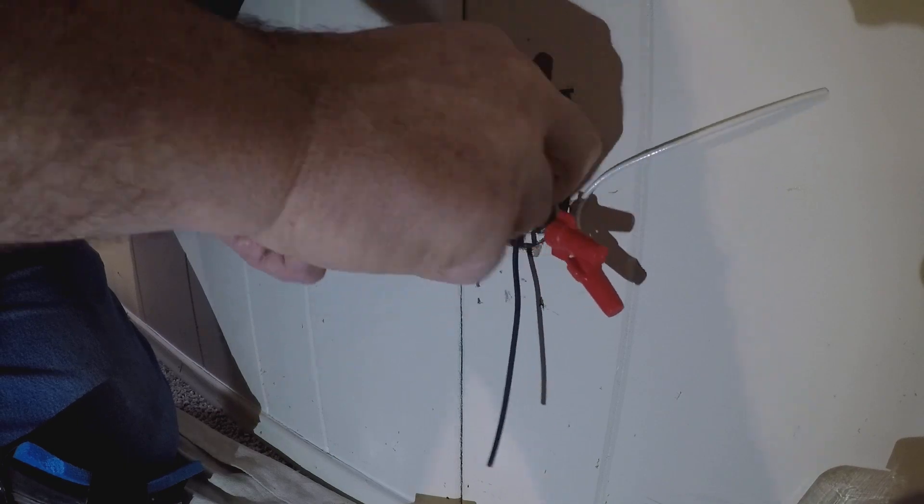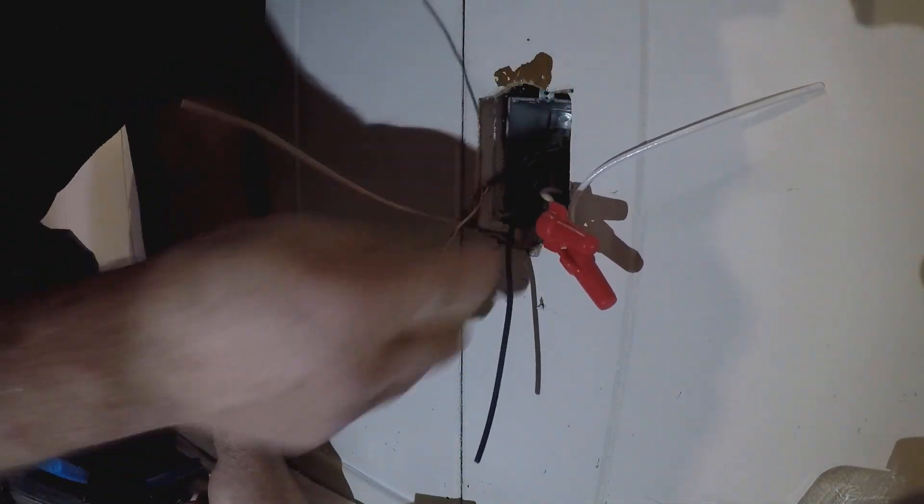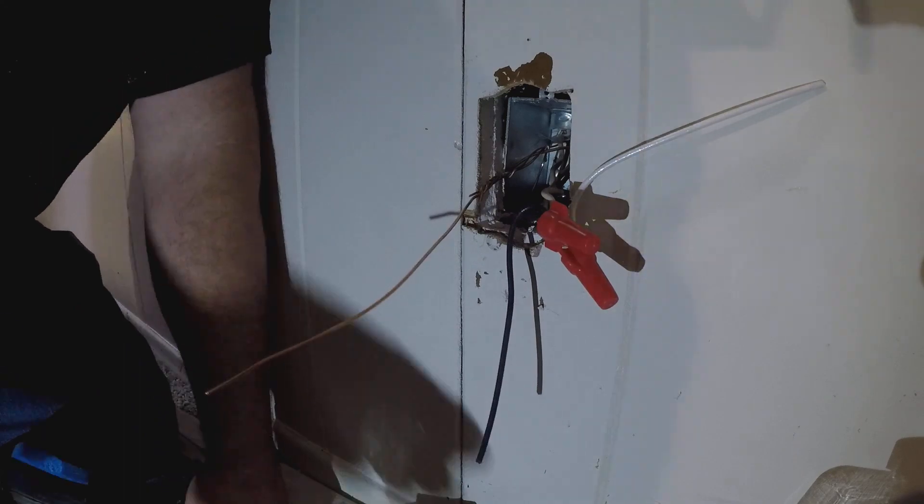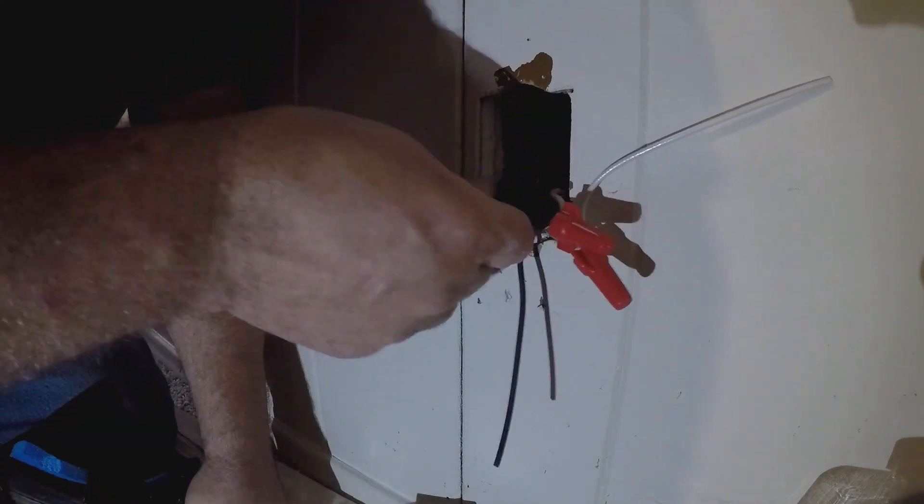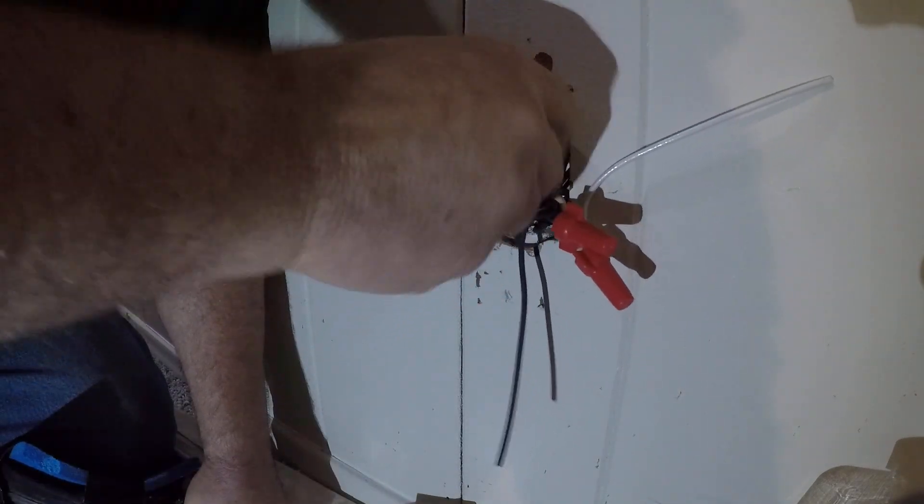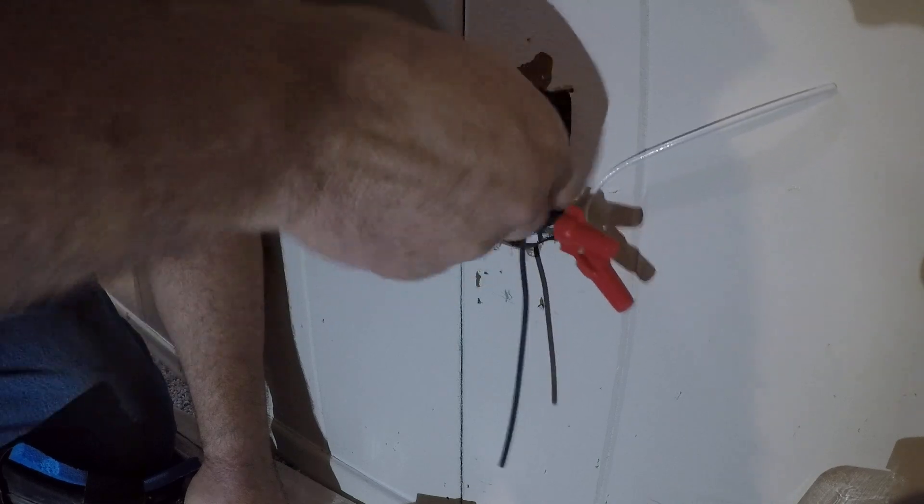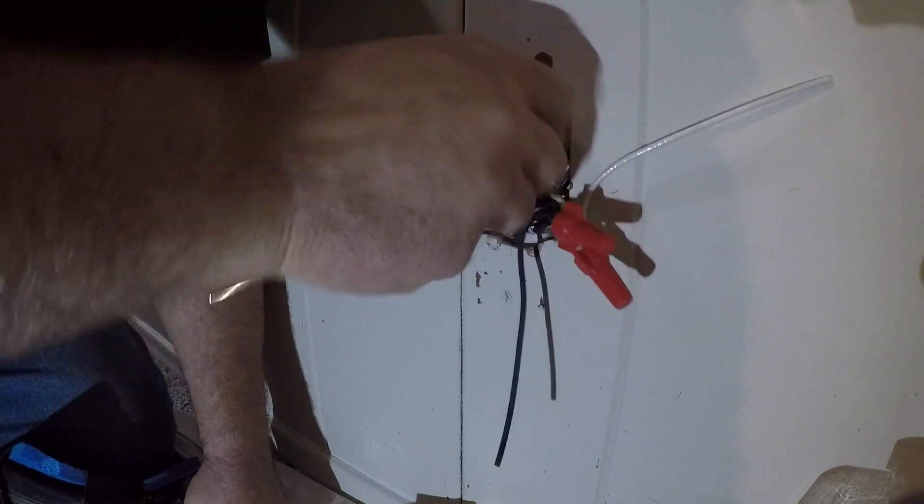So I'm going to twist all the wires together, clip it, put the green wire nut on, and what's nice is it lets that wire go through the nut to attach to the outlet. And there you go. We've fixed the grounding.